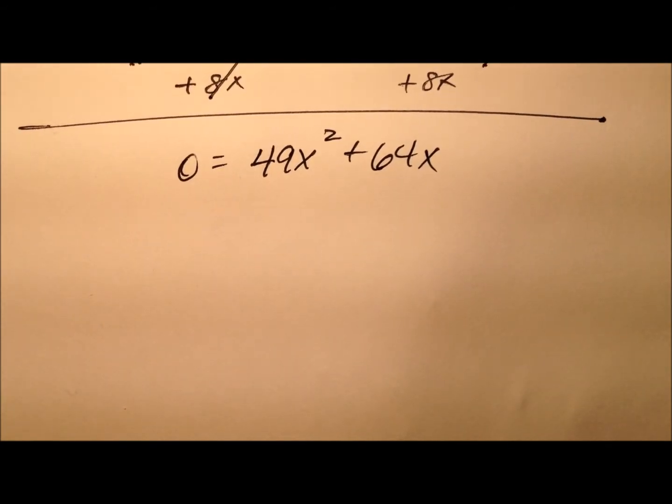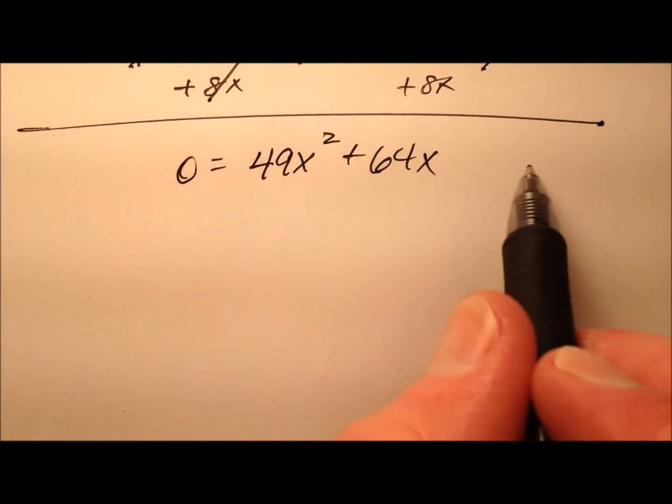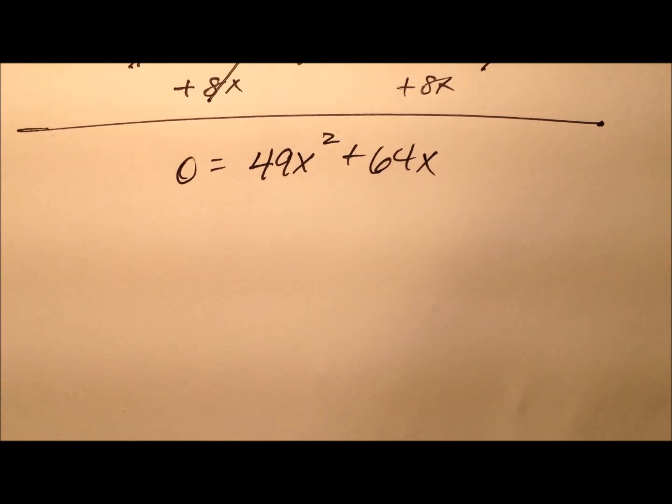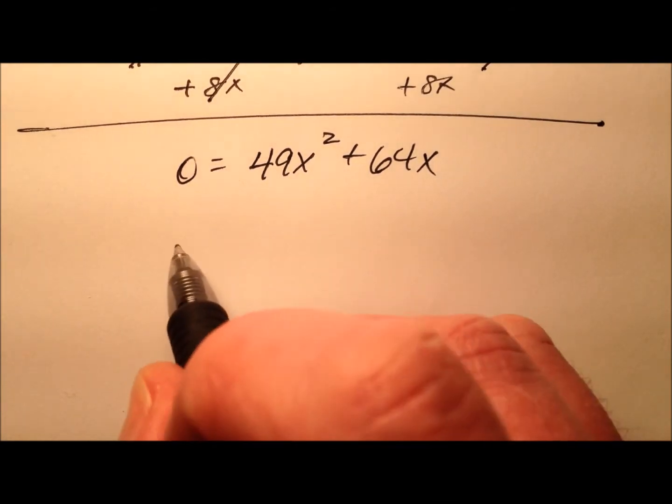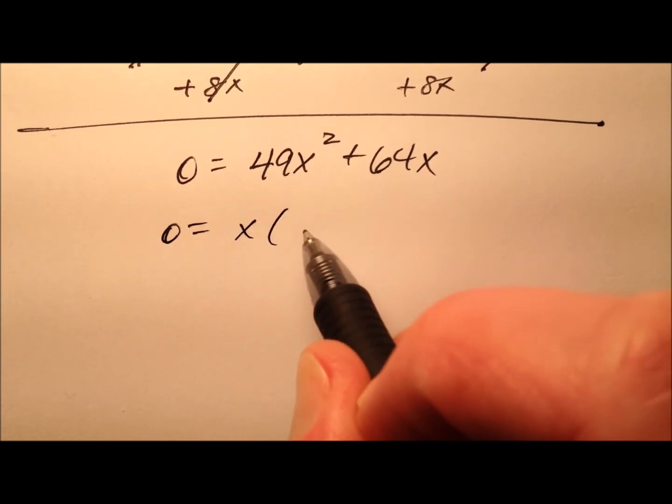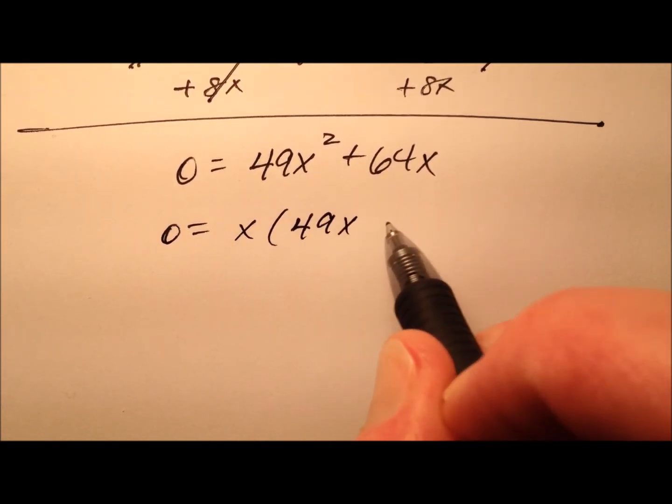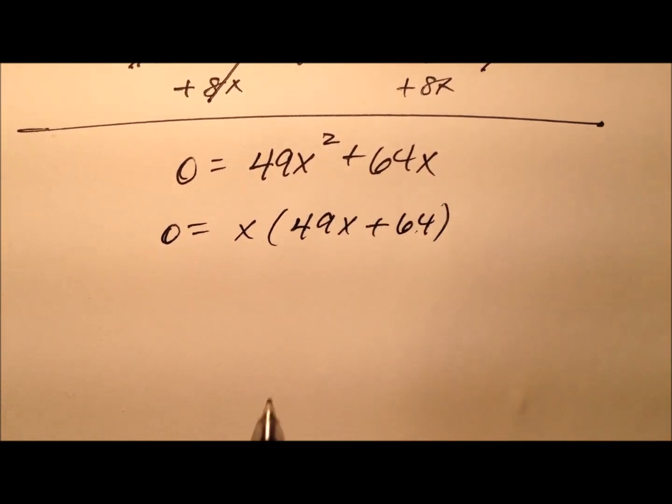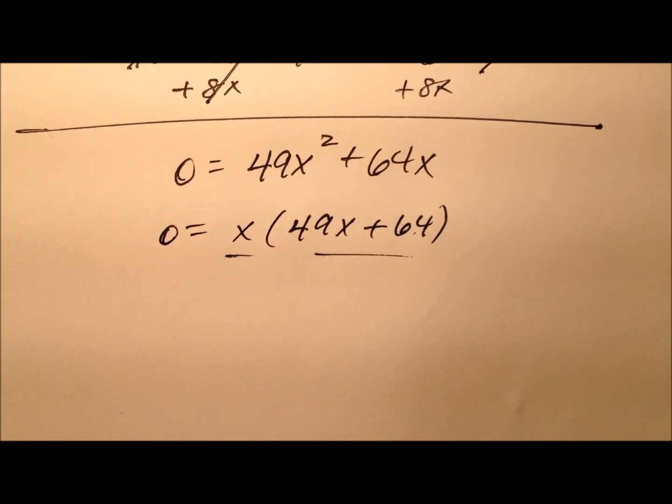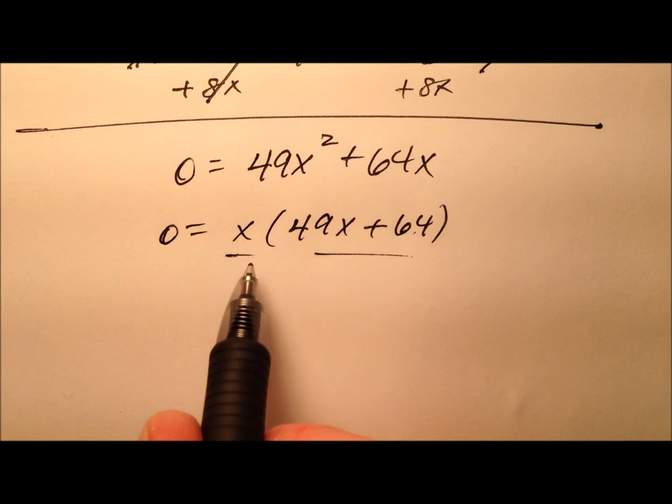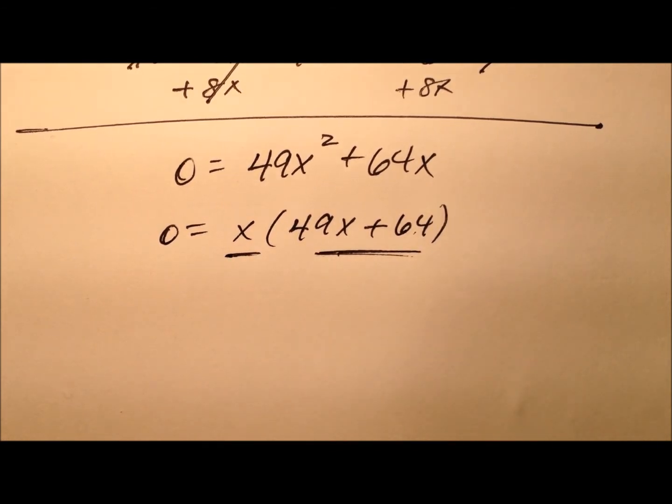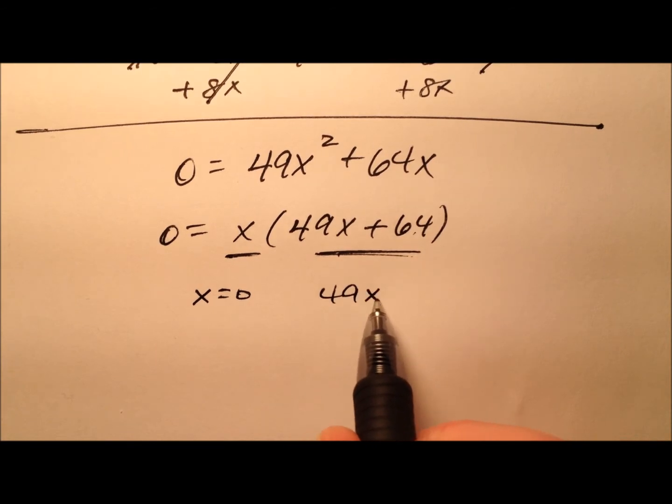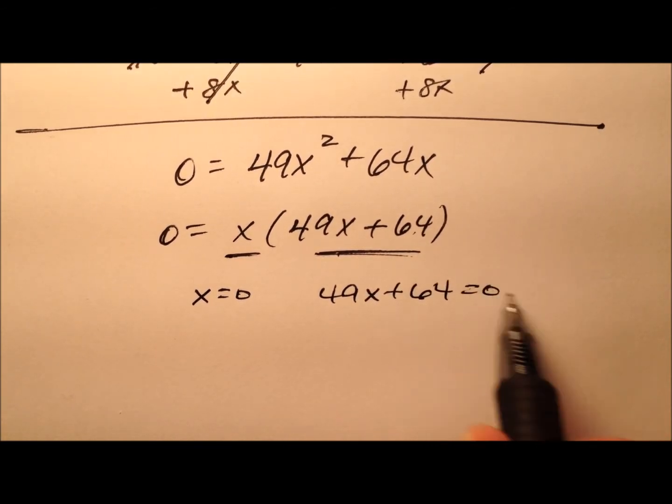This is not a bad place to be at all because we don't have to factor a trinomial. We're just going to factor this using the greatest common factor, which just looks like x. So pull that x out - 49x plus 64. We have these two factors being multiplied together to give us this 0. So we're going to use this zero property of multiplication and set both of the factors equal to 0.